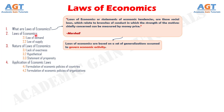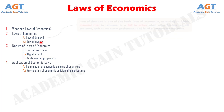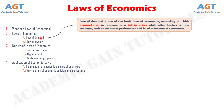In economics, there are two basic laws. The two types of laws of economics are law of demand and law of supply. Number one, law of demand. The law of demand is one of the basic laws of economics, according to which demand rises in response to a fall in prices while other factors remain constant, such as consumer preferences and level of income of consumers.